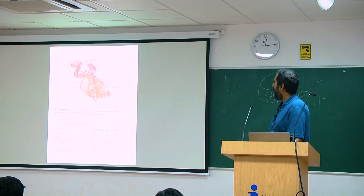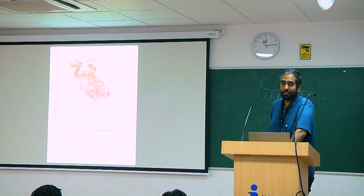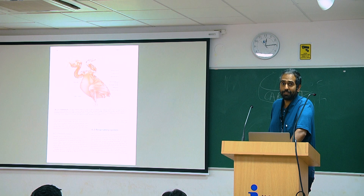The bones are fused to provide attachment points for larger muscles. This is the pectoralis, the muscle that drives the wing of a budgerigar — look how big it is.